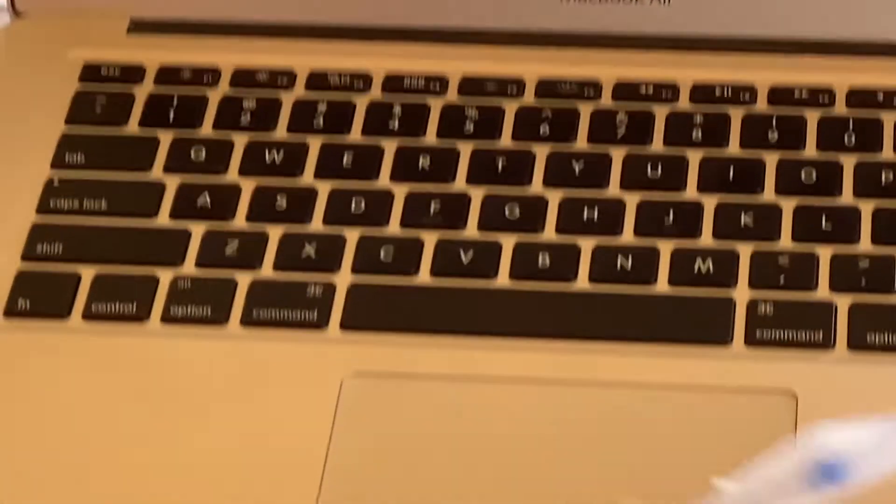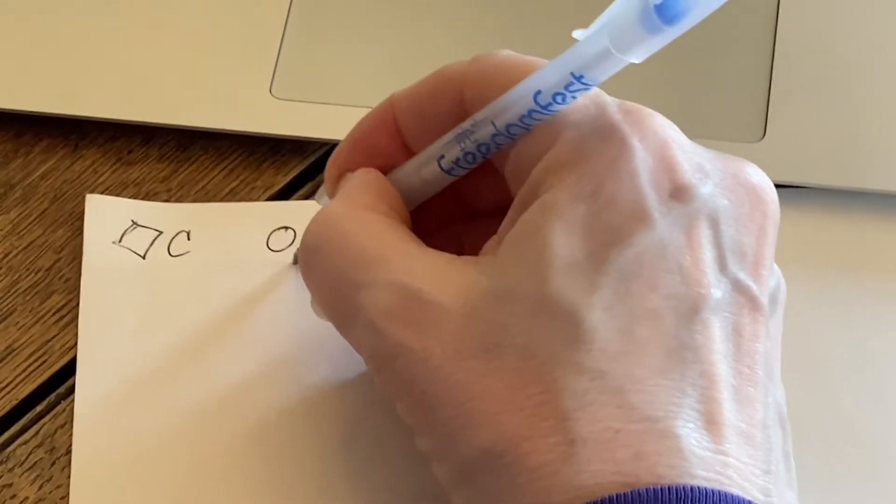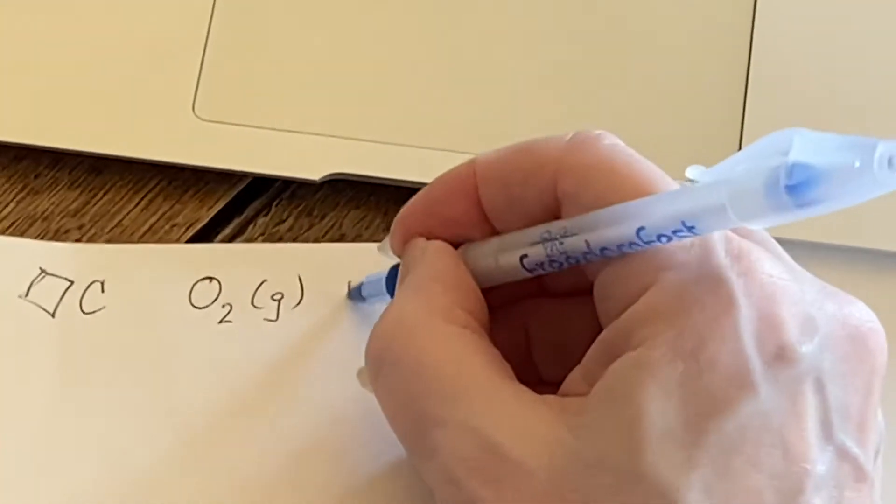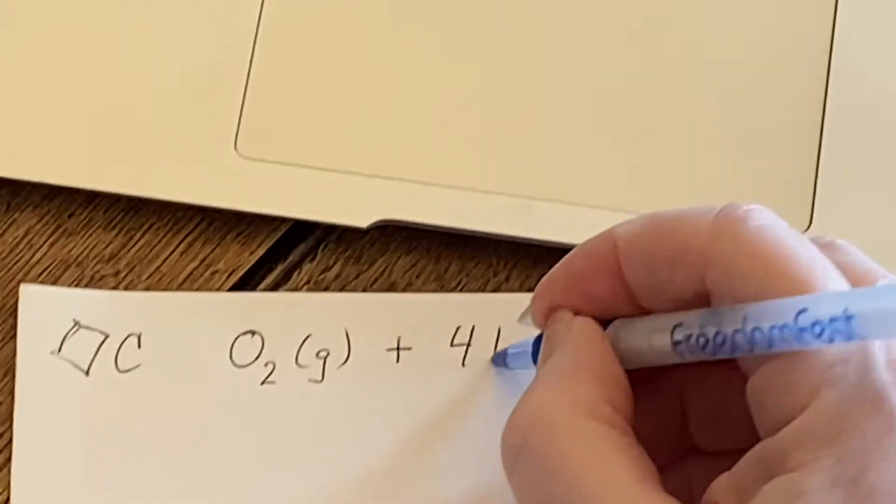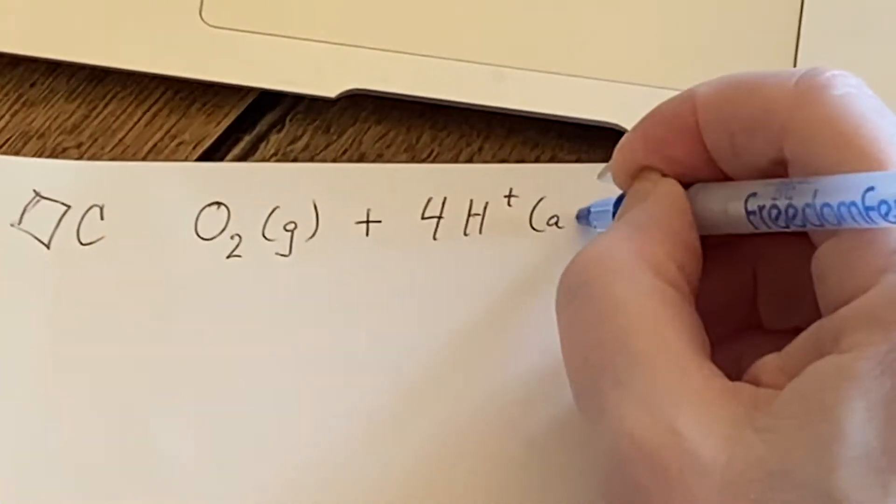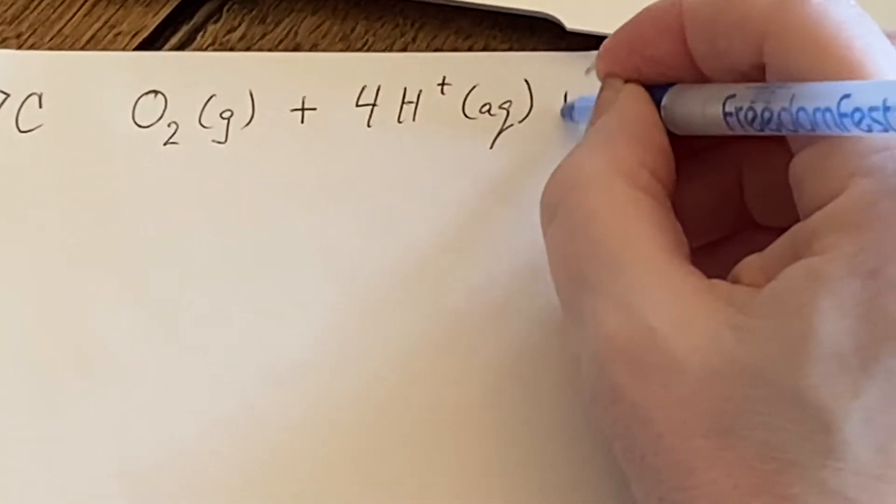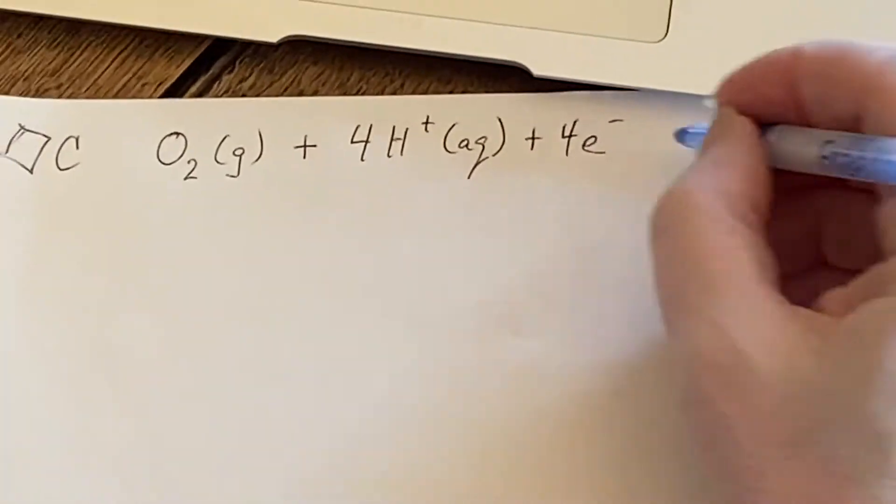It turns out that I can just take the one that I already have that is under acidic conditions and I can convert it to be under basic conditions. Now how would I do that?